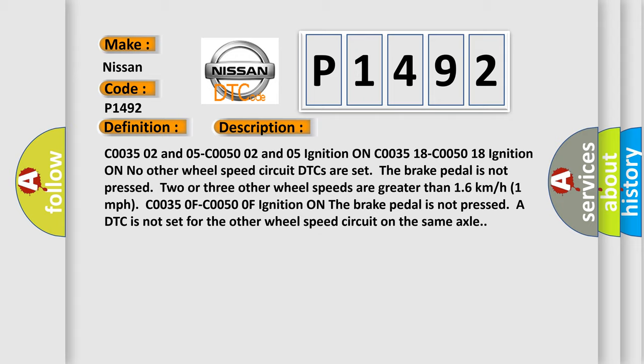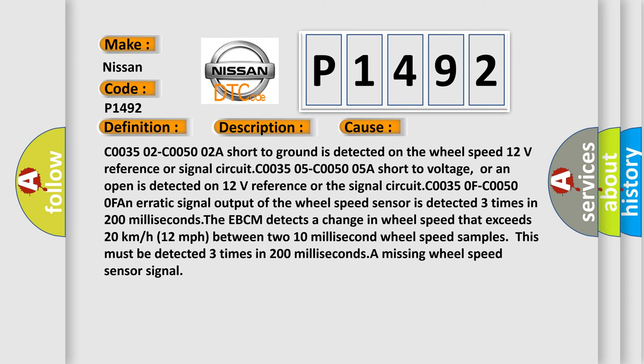This diagnostic error occurs most often in these cases. C0035 02, C0050 02: a short to ground is detected on the wheel speed 12 V reference or signal circuit. C0035 05, C0050 05: a short to voltage or an open is detected on 12 V reference or the signal circuit. C00350F, C00500F: an erratic signal output of the wheel speed sensor is detected three times in 200 milliseconds. The EBCM detects a change in wheel speed that exceeds 20 km/h (12 mph) between two 10 millisecond wheel speed samples. This must be detected three times in 200 milliseconds, a missing wheel speed sensor signal.